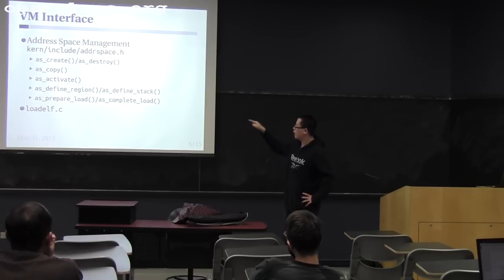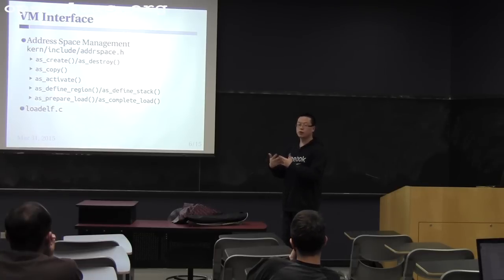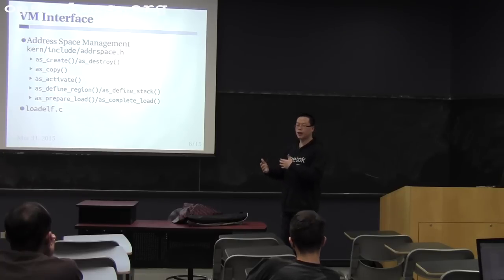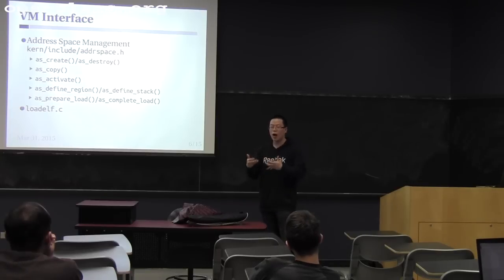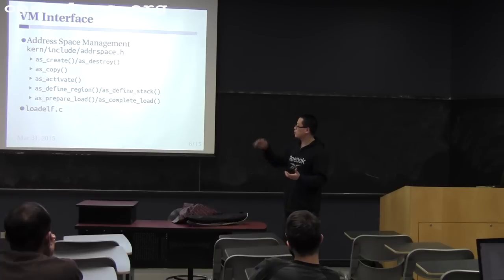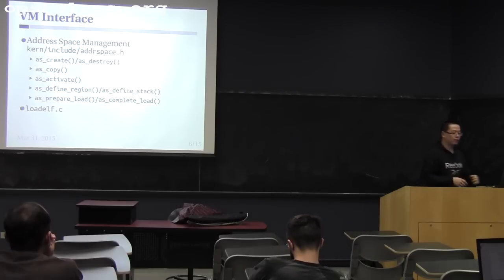AS define region, AS prepare load, and AS complete load are called during the load_elf process. In load_elf you're given a user binary and load it into memory — this happens in execv. AS define region tells the virtual memory system that the user program has a region with a start address and length. AS prepare load tells the VM that load_elf is ready to load content into memory. AS complete load tells the VM that load_elf is done loading. To implement these correctly, you need to understand how load_elf uses them.